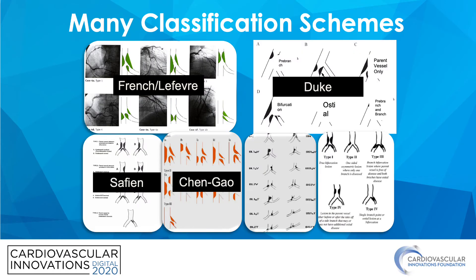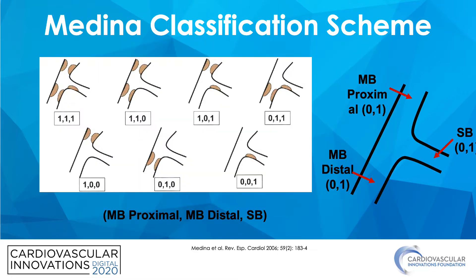There are many classification systems for bifurcations as seen here. However, the most commonly used classification scheme currently is the Medina classification. This is a binary classification where one represents the presence of greater than 50% stenosis and zero less than 50% stenosis. These three numbers correspond to the main branch proximal, the main branch distal, and the side branch.